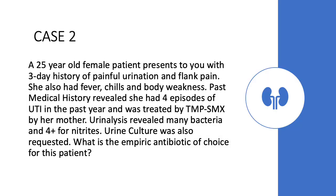The second case is a 25-year-old woman who presents with a three-day history of painful urination and flank pain. She also had fever, chills, and body weakness. Past medical history revealed she had four episodes of UTI in the past year, and was treated with TMP-SMX for all four episodes by her mother. Urinalysis revealed many bacteria and 4-plus for nitrates. Urine culture was also requested. What is the empiric antibiotic of choice for this patient?